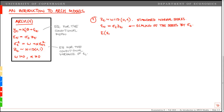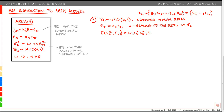Now look at the expected value of epsilon_t squared given the information set at t minus 1 — the conditional variance of the shock. The information set at t minus 1 includes y_1, x_1 up to y_{t-1}, x_{t-1}, from which we can compute epsilon_1 through epsilon_{t-1}. Plugging in epsilon_t equals sigma_t z_t, we get the expected value of sigma_t squared times z_t squared conditional on the information set. Since epsilon_{t-1} is in the information set, and sigma_t squared equals omega plus alpha times epsilon_{t-1} squared, we can place sigma_t squared outside the expectation.